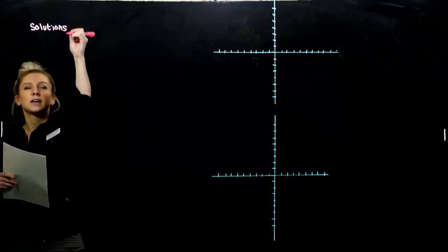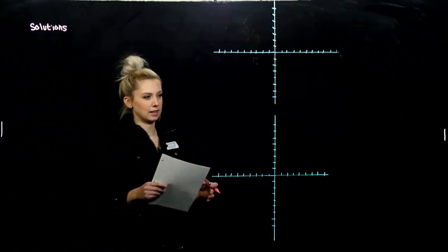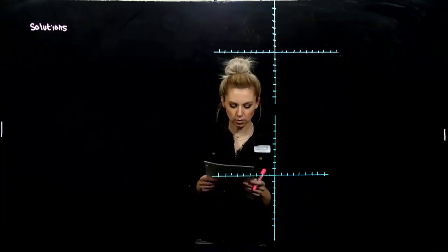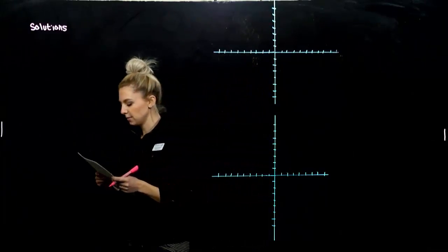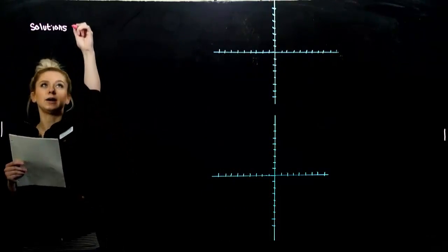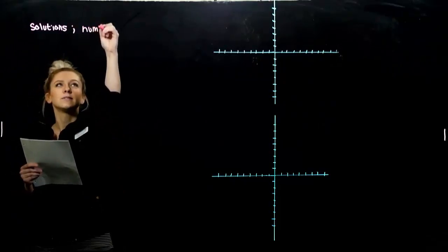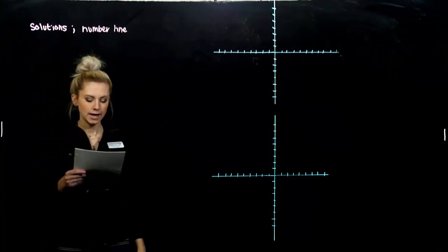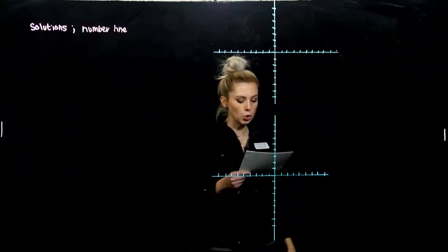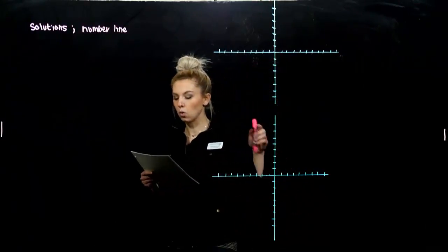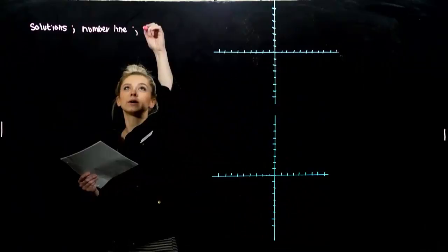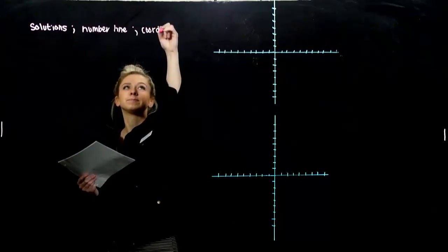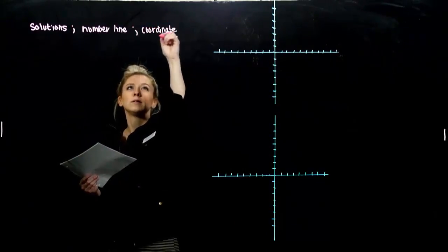So just to start us off, a graph of an inequality is a drawing that represents its solutions. Even when we just had lines, any point on that line was a solution to the line. An inequality in one variable can be graphed on the number line. We've seen that before in this class. And an inequality in two variables can be graphed on a coordinate plane, which is what we're going to look at today.